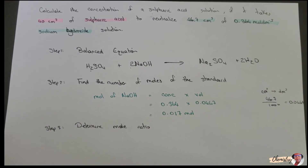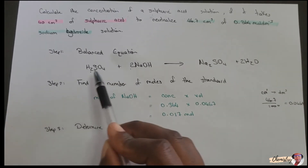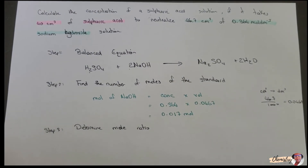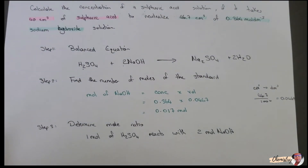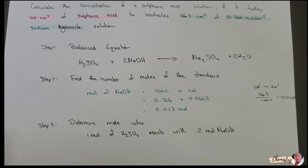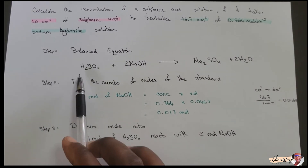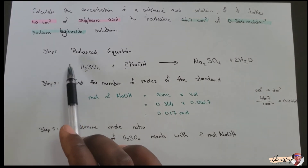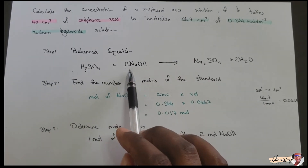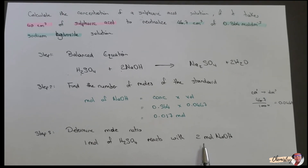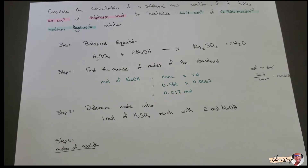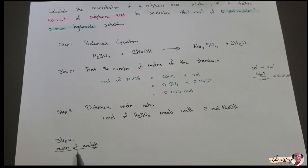To determine the mole ratio we use the coefficients — the numbers in front — to tell how many moles of each reactant will react. This tells us that one mole of sulfuric acid reacts with two moles of sodium hydroxide. There is no number in front of sulfuric acid so that means one mole, and we have a 2 in front of sodium hydroxide so that means two moles.